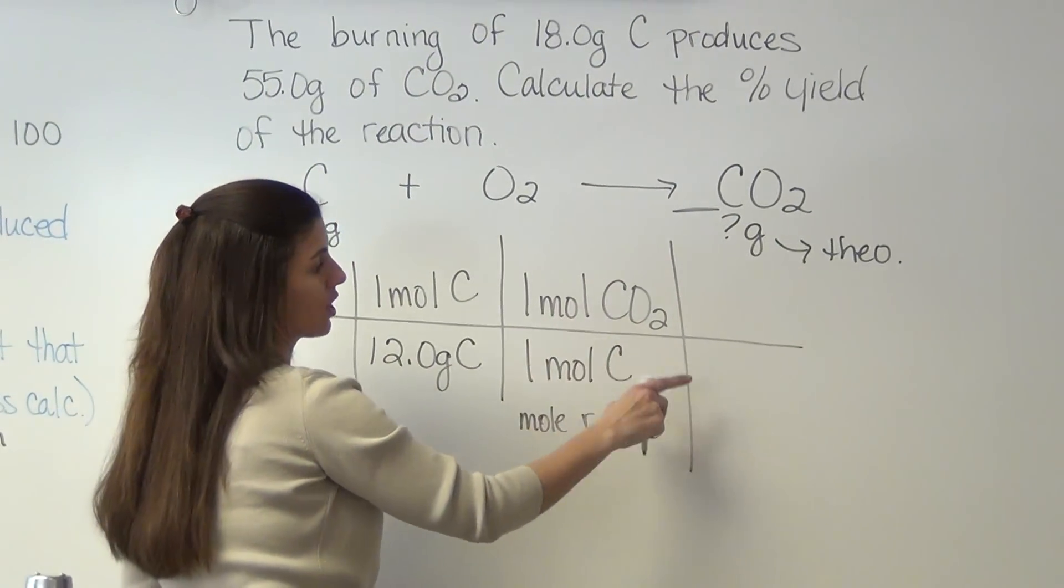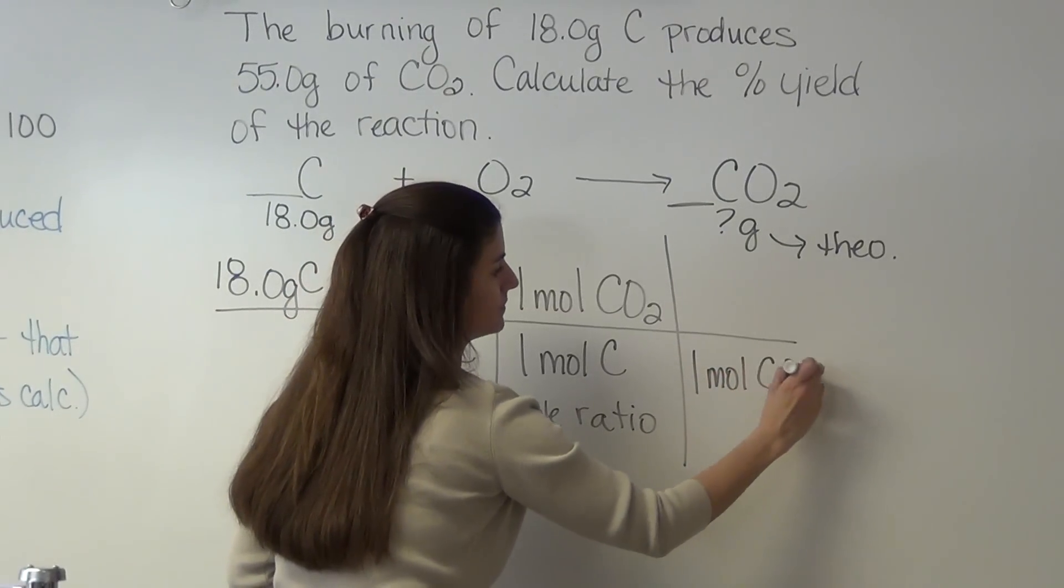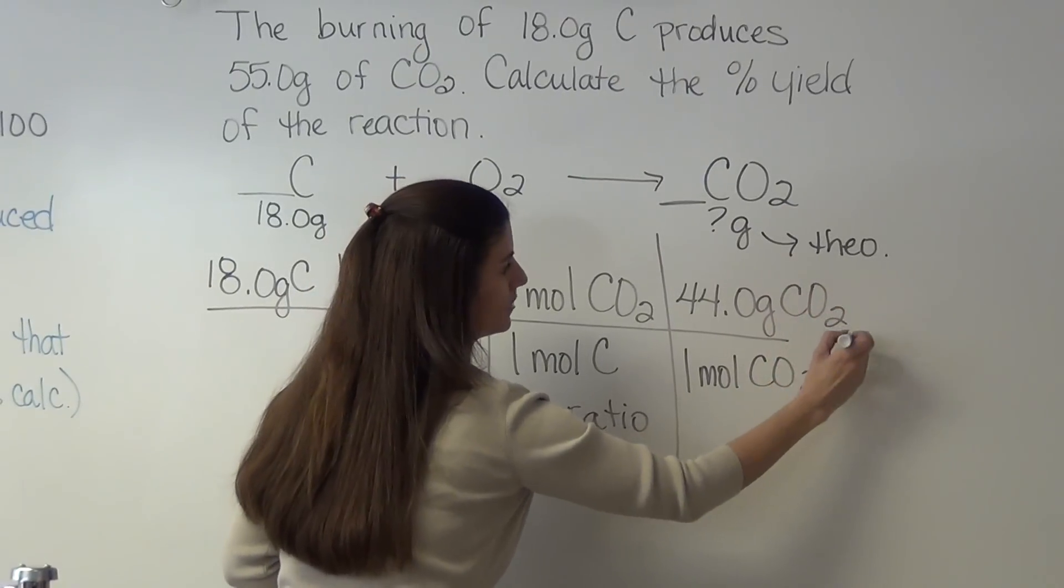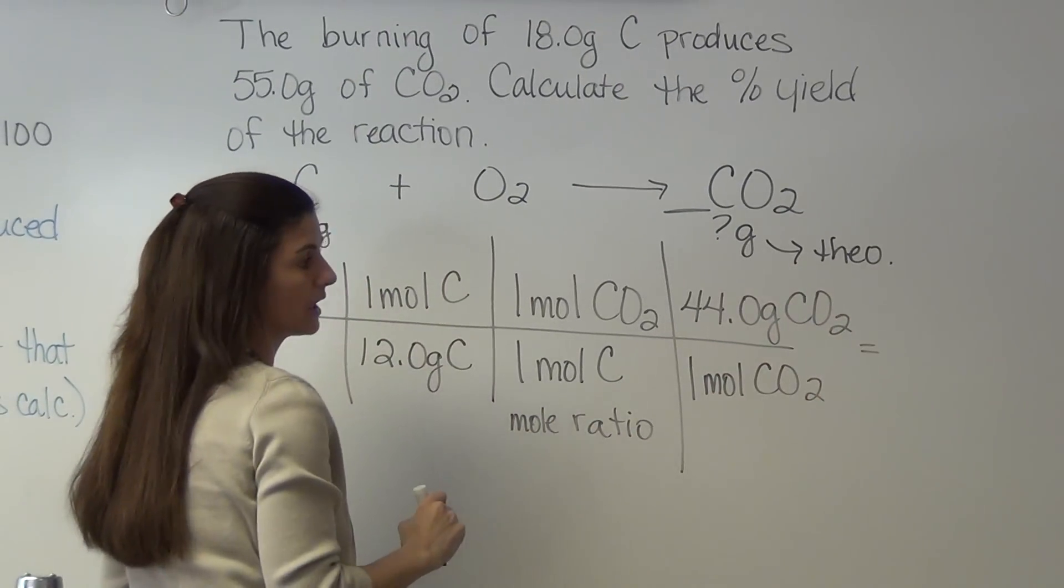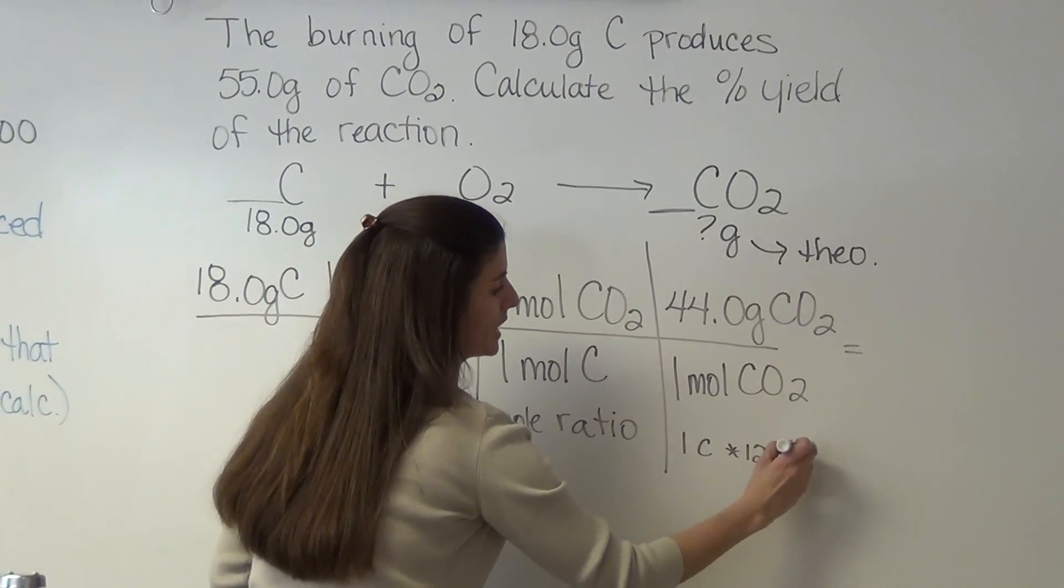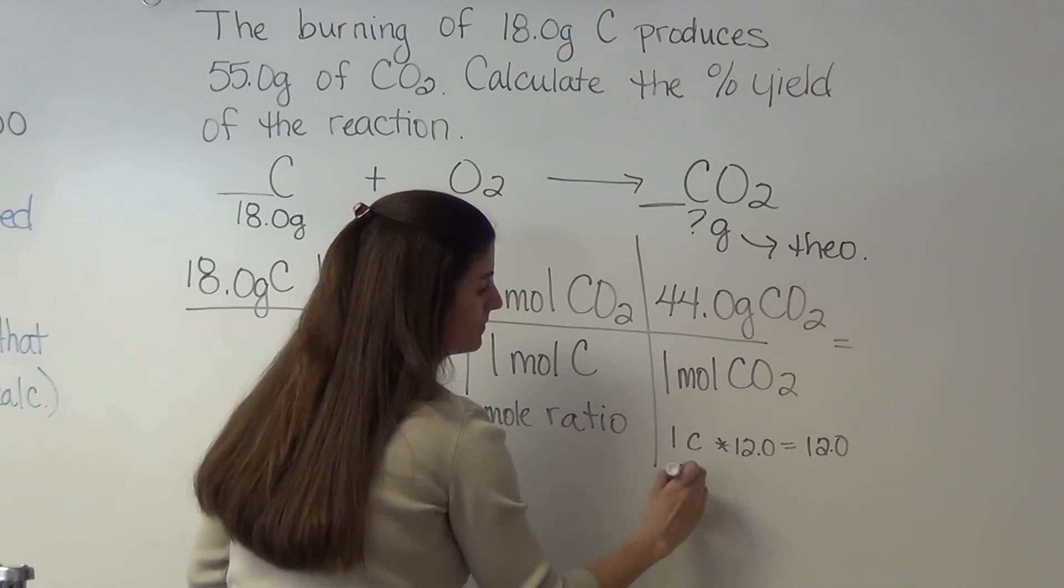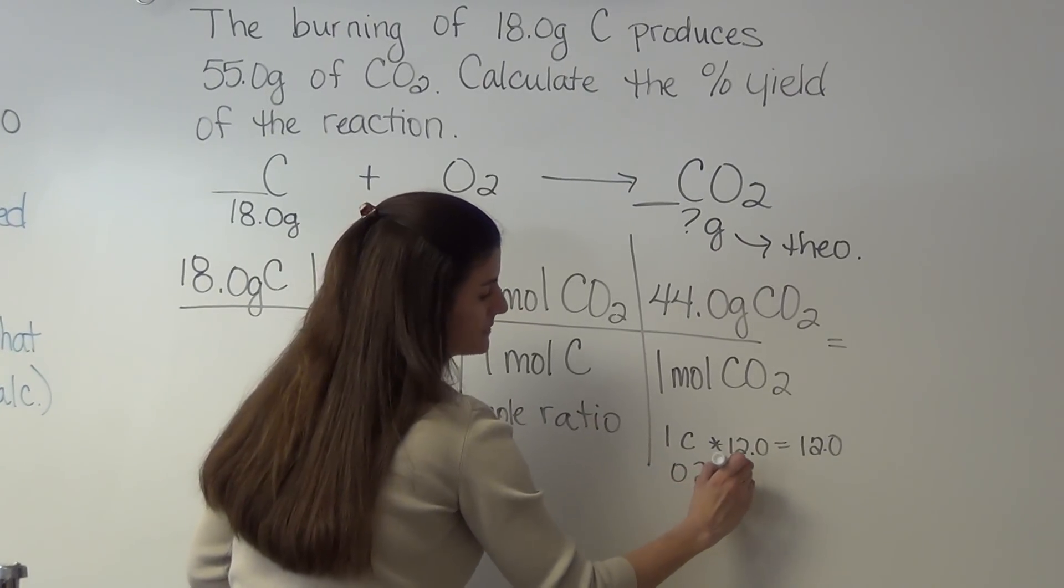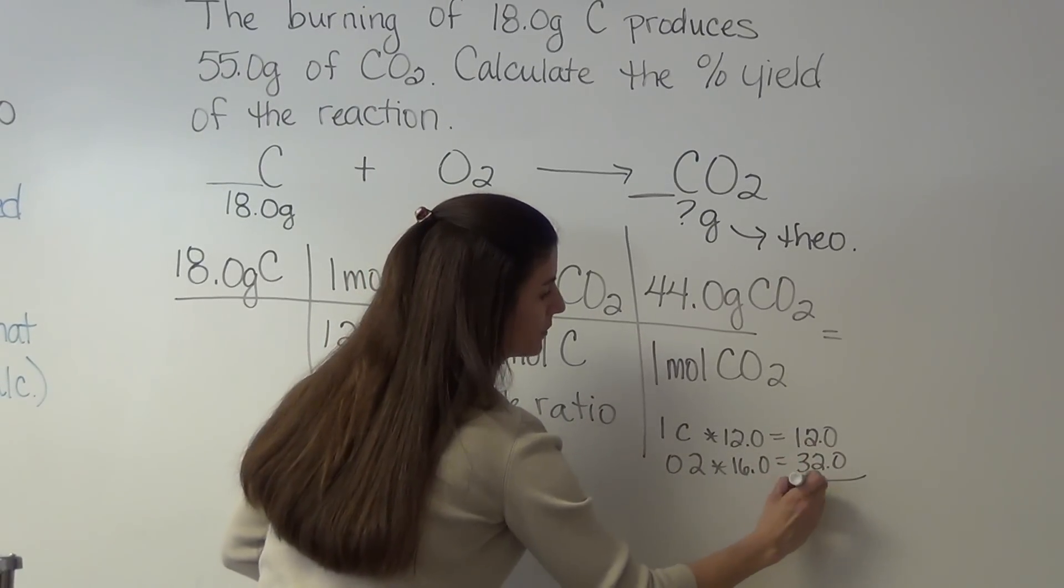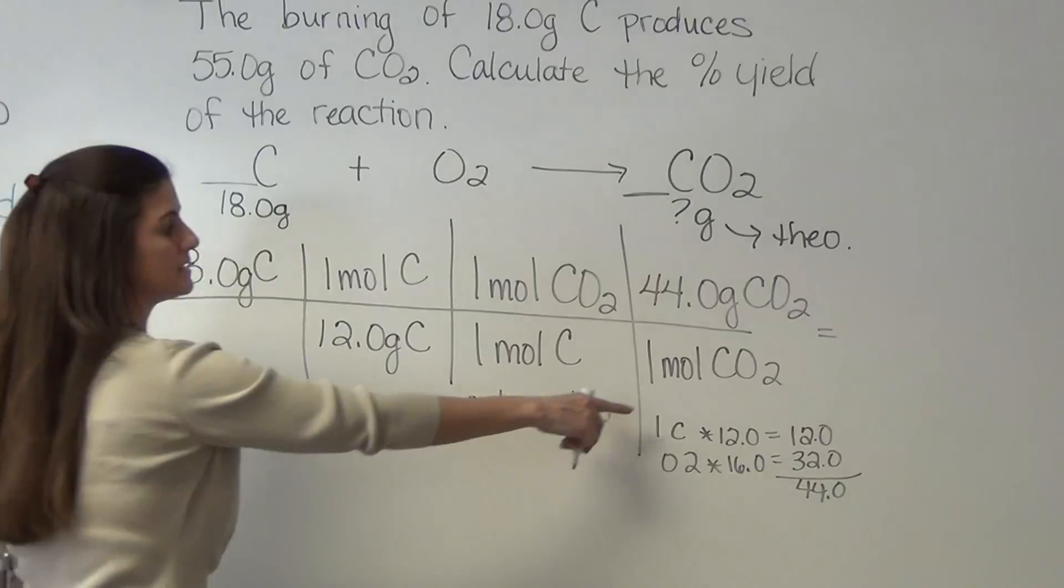Now we're converting from moles of carbon to grams. We have one mole of CO2 is 44.0 grams of CO2. This is from our periodic table because we have one carbon times the 12.0 grams is 12. We have the oxygen, there's two of them, times the 16.0, which gives us our 32.0. Add it up and we have 44.0 grams is equal to our one mole.